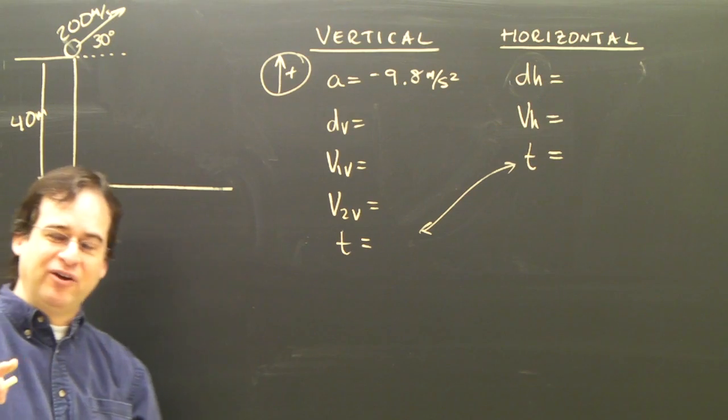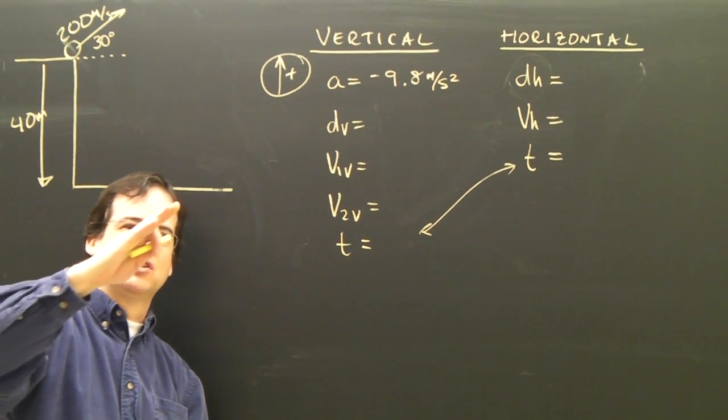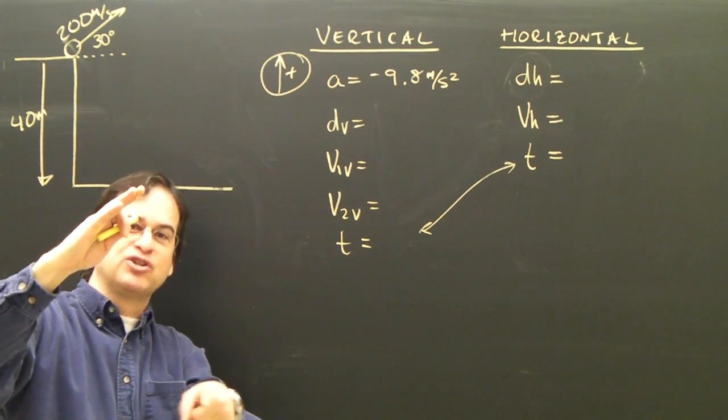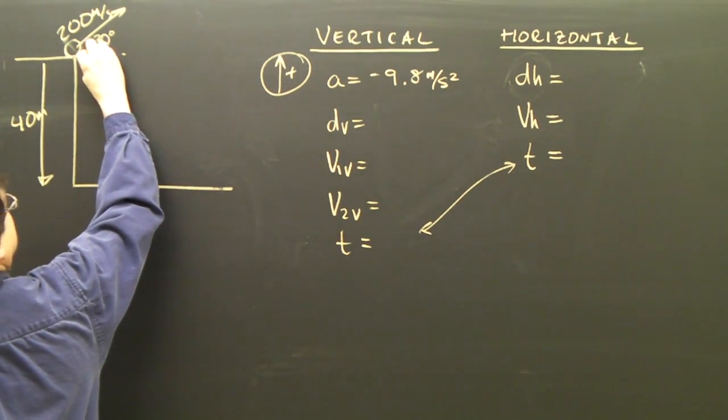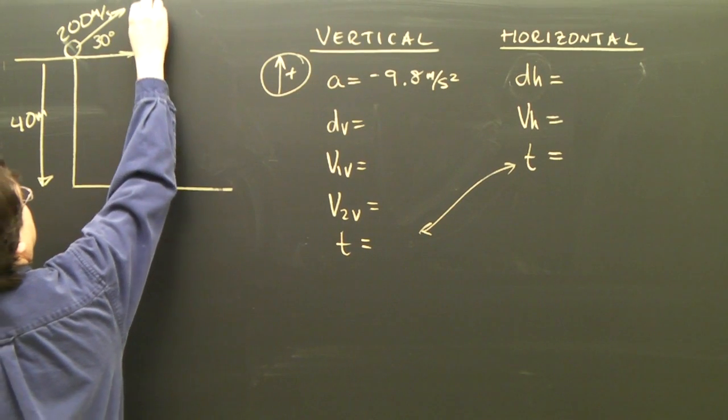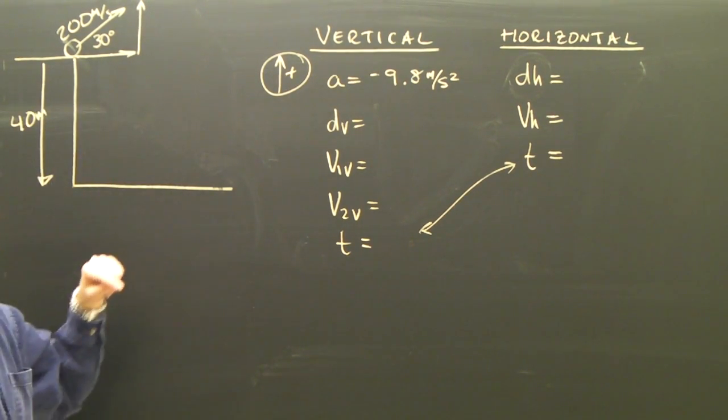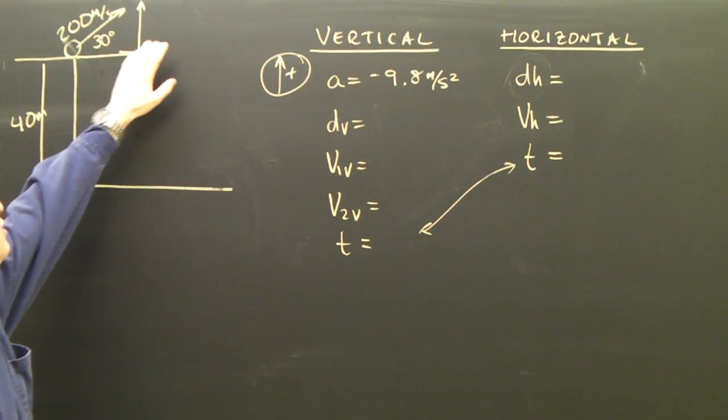So what's happening here is the 200 meters per second the projectile is launched this way. It has a horizontal component and a vertical component. So let me break it up into those two pieces. There are my two components. This is obviously the horizontal, this is the vertical.